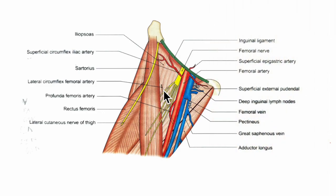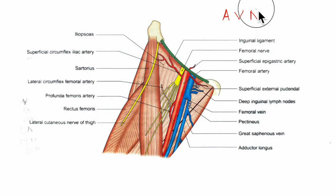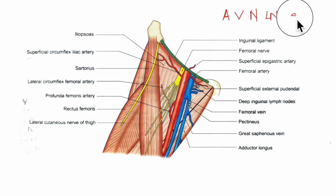Now let's learn about the contents of the femoral triangle. To remember the structures easily, we'll follow a particular order: first the artery, then a vein, then nerves, then lymph nodes, and finally a sheath.